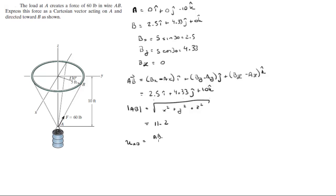Now to find the unit vector AB, you're going to divide the vector over the magnitude. And when you divide the vector over the magnitude, you get that it's equal to 0.223i plus 0.387j plus 0.893k.